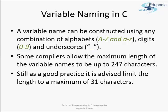Now we will discuss the naming of variables, which is very important. A variable name can be constructed using any combination of alphabets — capital A to Z or small alphabets — digits from 0 to 9, and underscores. No other special characters except underscores are allowed. Some compilers allow a maximum variable name length of up to 247 characters, but as a good practice it is recommended to limit variable names to 31 characters. This will optimize your code, make it more readable, and also save typing time.